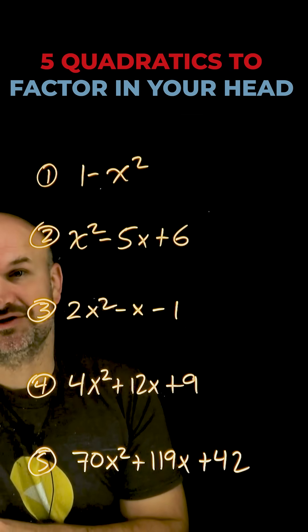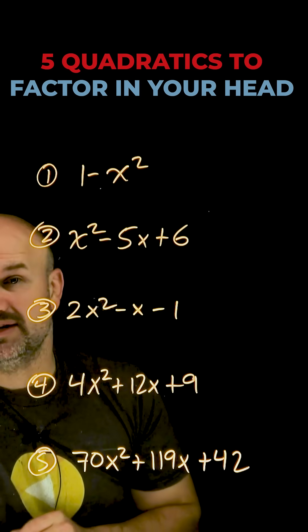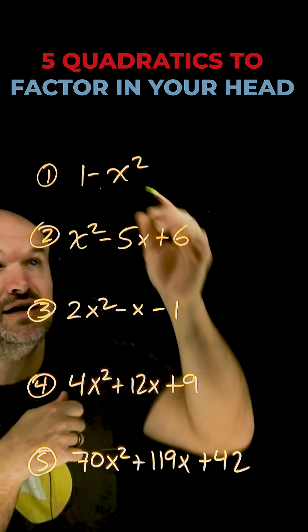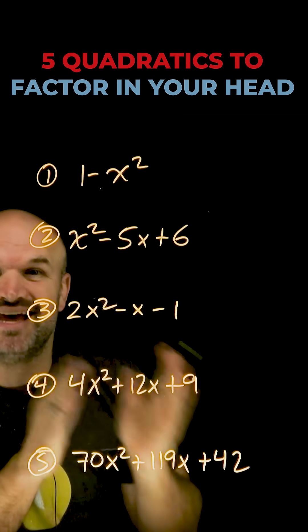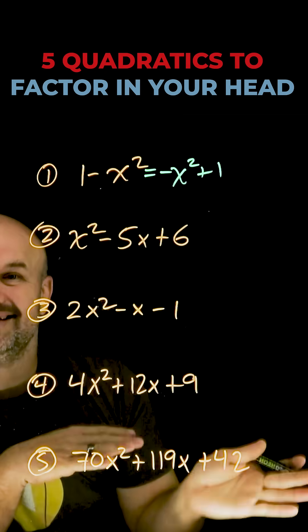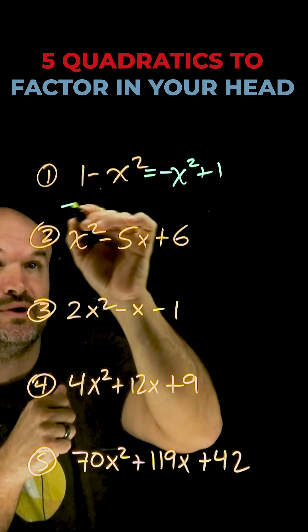Let's go over five examples that I expect my students to be able to do in your head. The first one is going to be a difference of two squares, but to get it into the format that we're going to want, the first thing we're going to do is rearrange this and then factor out a negative. When I rearrange this I get negative x squared plus one. Now I can factor out the negative and put it into difference of two squares.